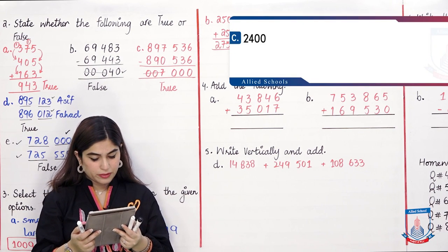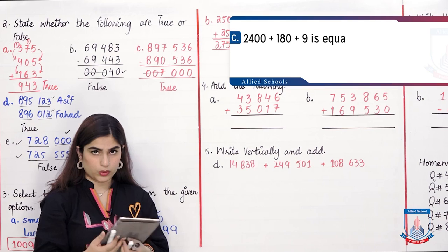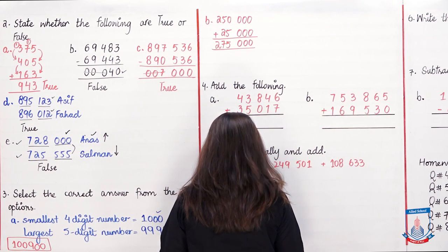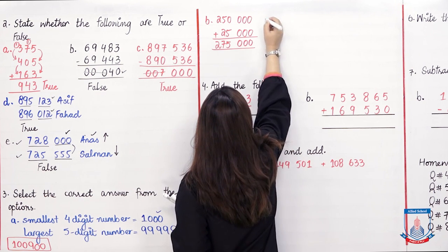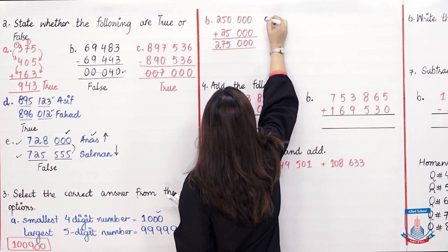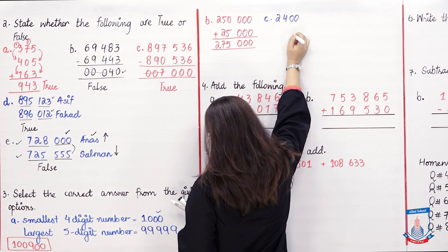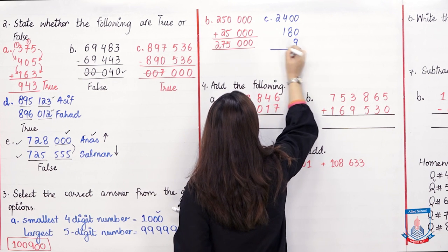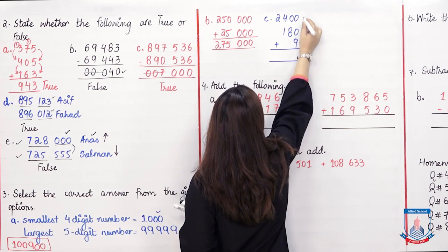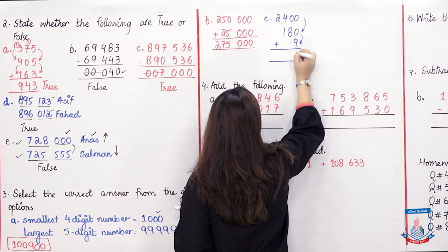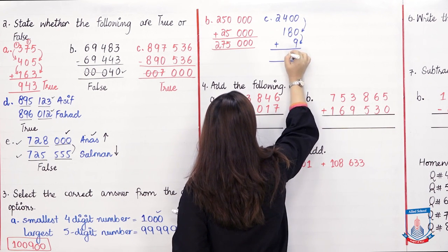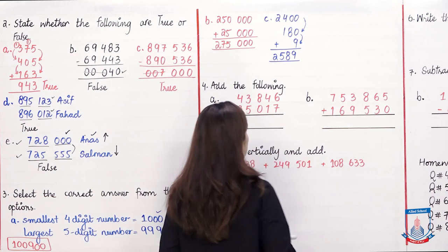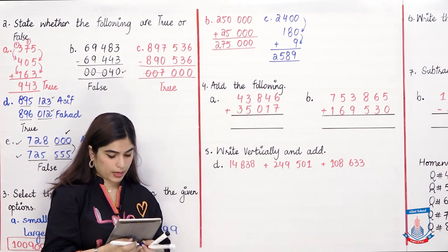Part C: 2,400 plus 180 plus 9. Adding vertically: 0 plus 0 is 0, 0 plus 9 is 9, 0 plus 8 is 8, 4 plus 1 is 5, and 2 stays the same. The answer is 2,589.